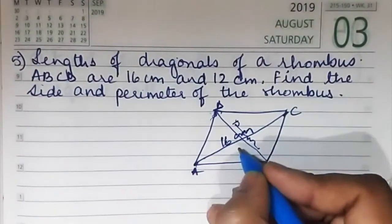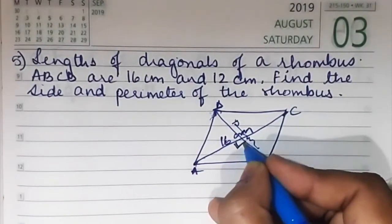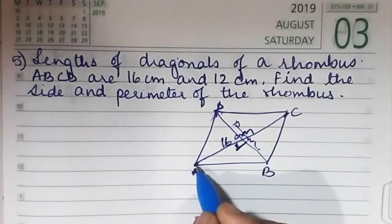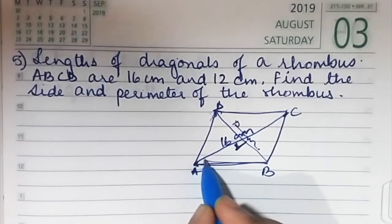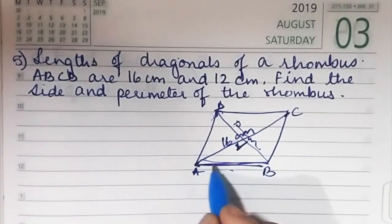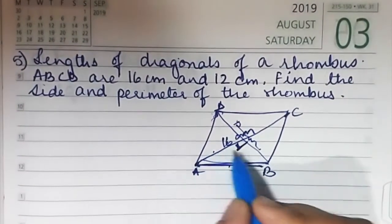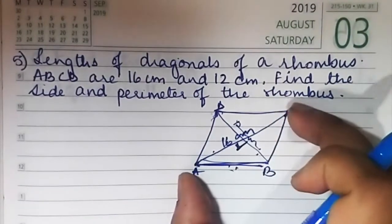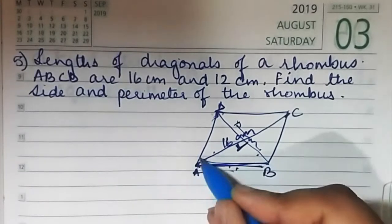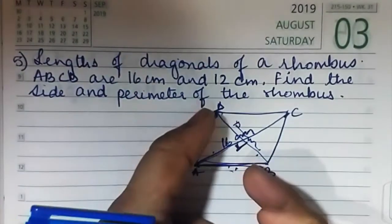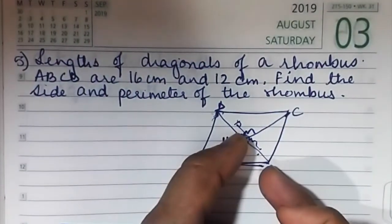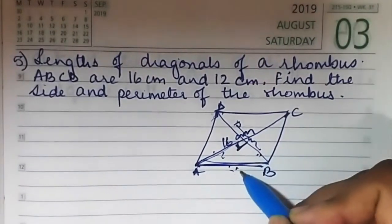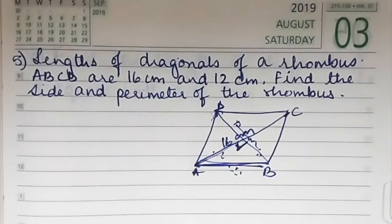The diagonals bisect each other, so this angle is 90 degrees. We can use Pythagoras theorem and find the side, because the side becomes the hypotenuse. The whole diagonal is 16, so half is 8. The whole diagonal is 12, so half is 6. We have to find the side — that is the hypotenuse.